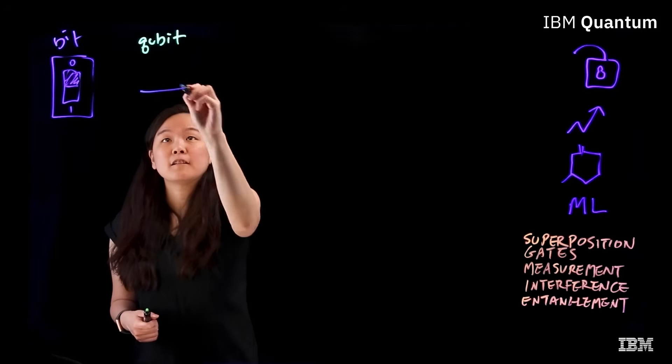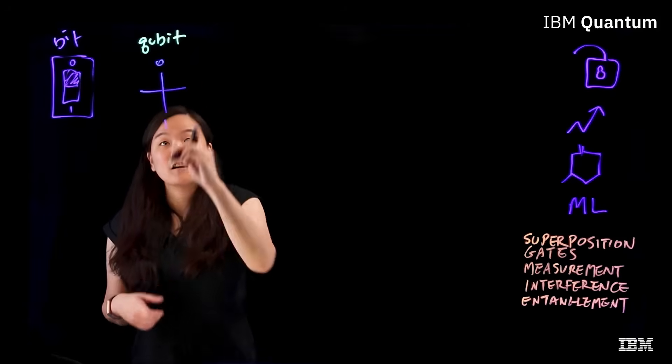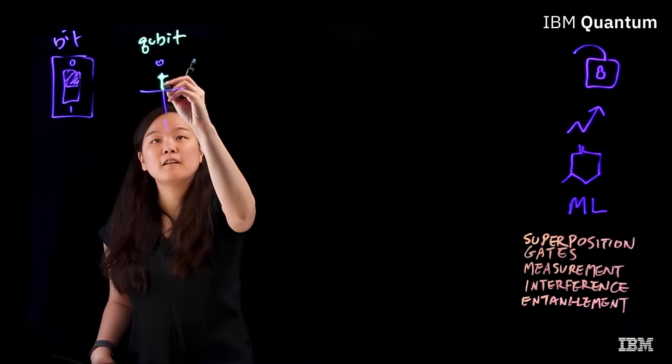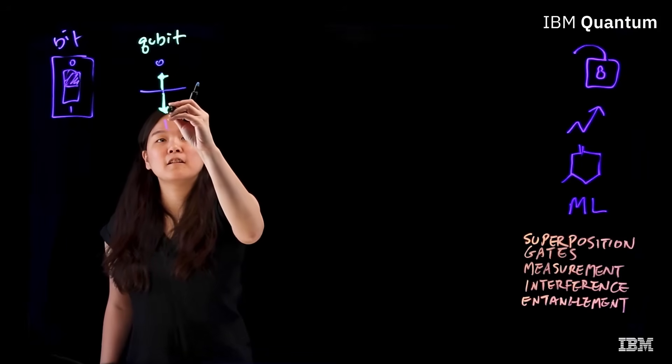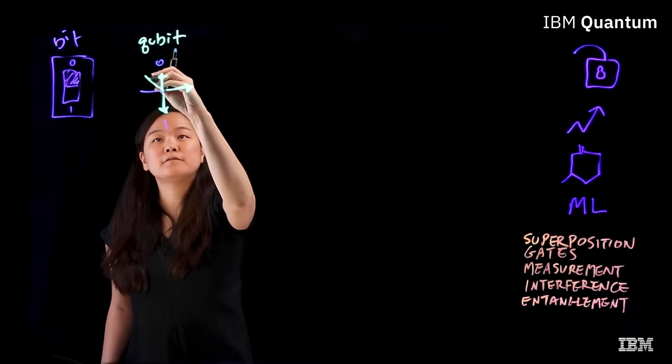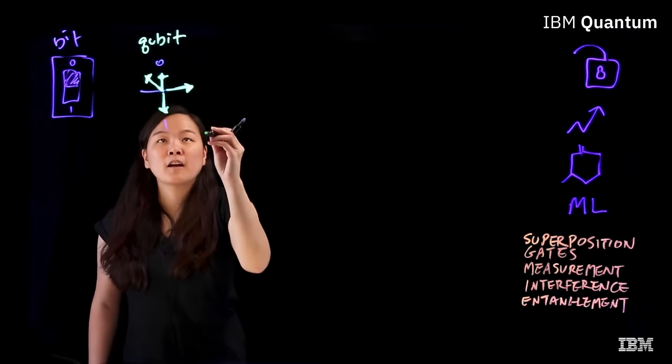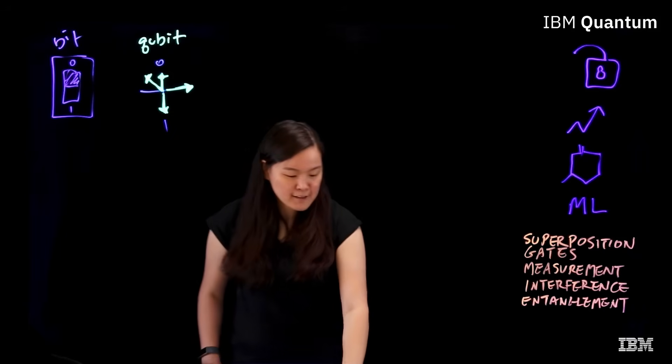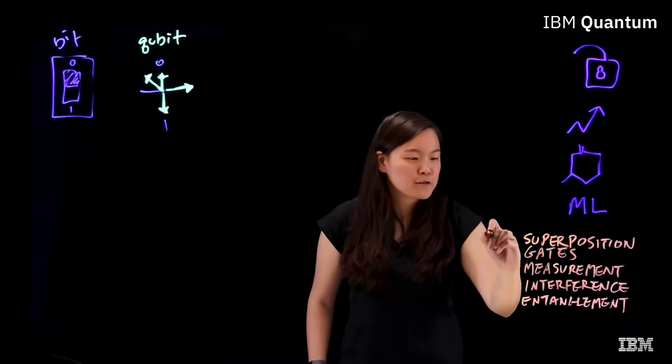A qubit can be a zero, a one, or any linear combination of the two. This spectrum of states is what we call a superposition.